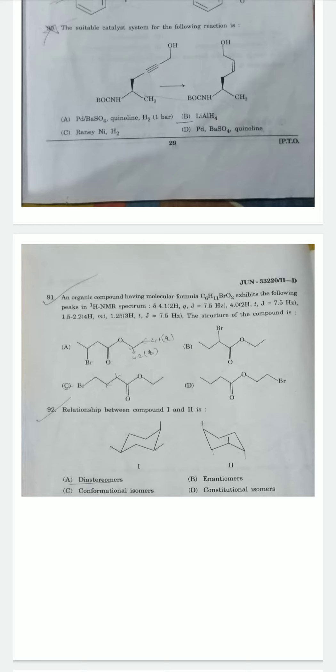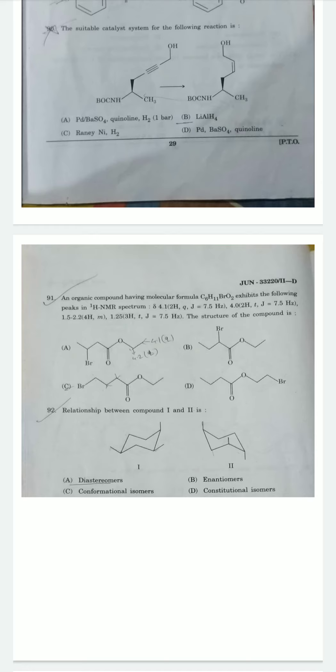Question 14: An organic compound with molecular formula C6H11BrO2 exhibits the following peaks in H1 NMR spectra: 4.1 ppm 2 hydrogen quintet with coupling constant J equals 7.5 Hz, 4.0 ppm 2 hydrogen triplet, 1.5-2.2 ppm 4 hydrogen multiplet, and 1.25 ppm 3 hydrogen triplet with coupling constant 7.5 Hz. Based on this data, option C is the correct structure.